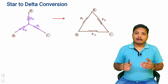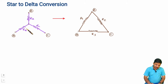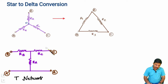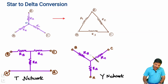Let us first see what is a star network and what is a delta network. In a star network, terminals A, B, and C are connected to a neutral terminal in a star pattern. This network is also referred to as a T network, and it is also called a Y network because if you stretch terminal A downward it appears like the letter Y.